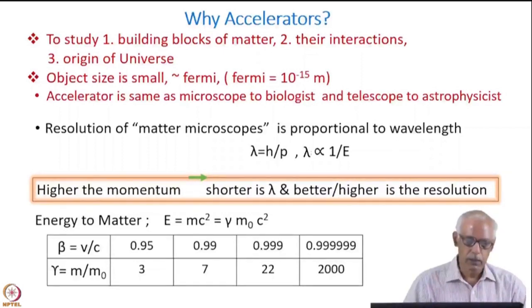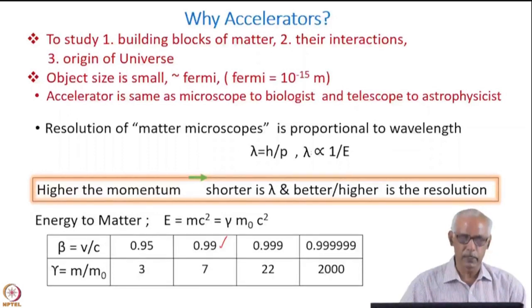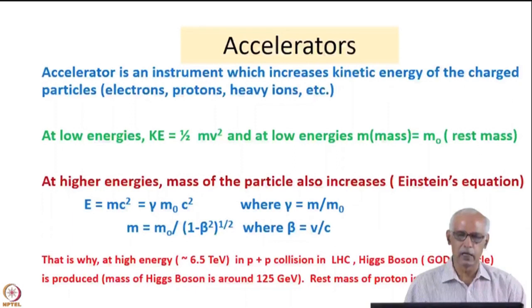This is shown here: if beta (v/c) is of the order of 0.99, then gamma is 7, which means that particle has become seven times heavier than the particle at rest. And if it is 0.999, then it will become 2000 times heavier. That is precisely the reason why we are able to create very heavy particles using light particles at higher energies.